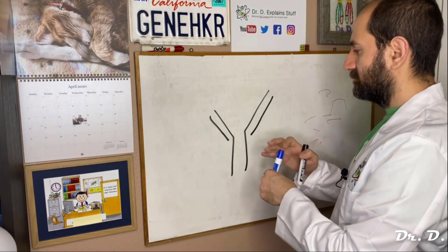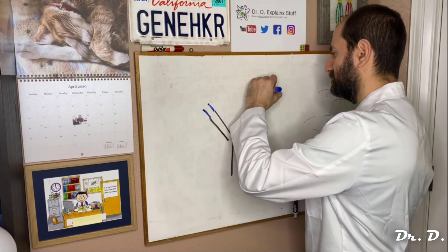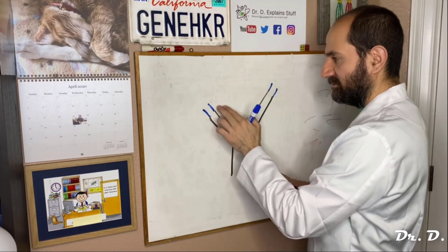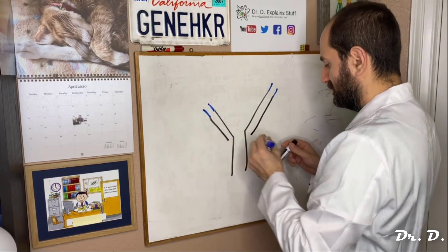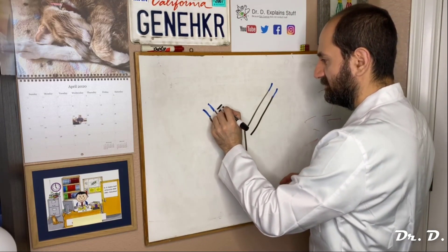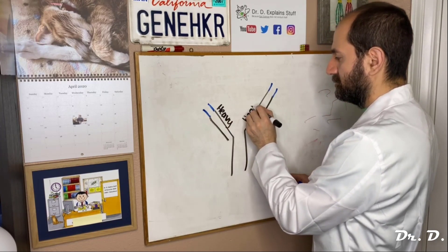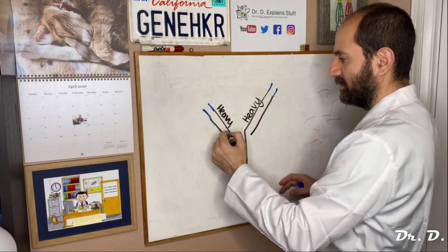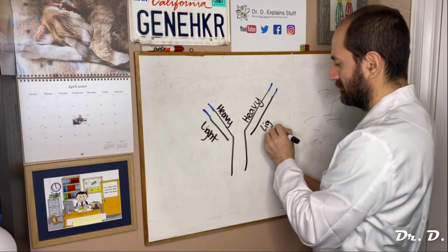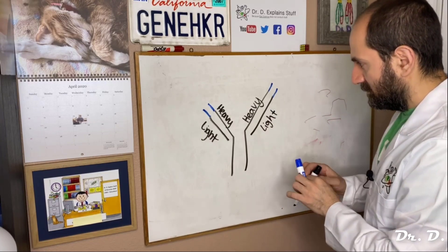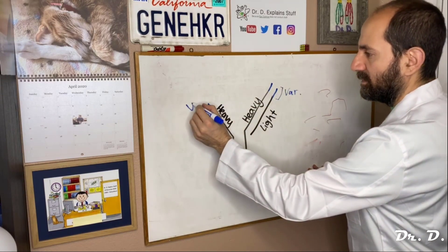At the tips you have what's called the variable region. So the heavy chains have a variable region and the light chains have a variable region. The longer ones are the heavy chains, and the smaller ones are the light chains because they're smaller. This blue part is called the variable part.